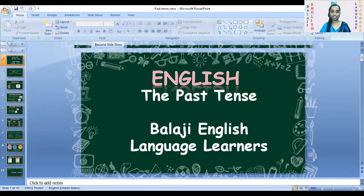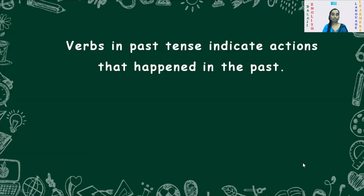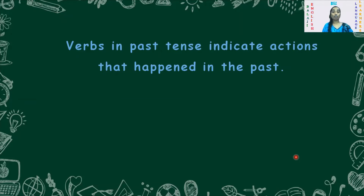So what is past tense? Verbs which are used in the past tense indicate that the actions happened in the past. Those actions which already happened in the past come under the past tense. For example: worked, smiled, loved — or even 'I cracked the joke,' 'I got a job.' There are four types, but we are going to see only two today: simple past and past continuous.